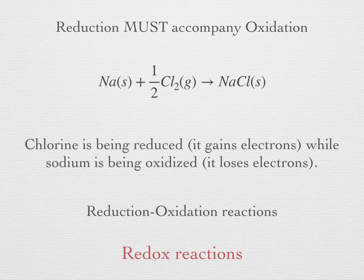Every chemical process involves the movement of electrons and atoms — that is the essence of chemical transformation. Some reactions, however, involve a significant reorganization of electrons, so much so that it is appropriate to see the atoms involved as changing their oxidation state. We analyze these reactions in terms of redox processes.